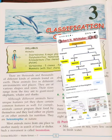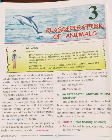Today we are going to learn about the classifications of animals. There are thousands and thousands of different kinds of animals found on Earth. These animals live in different environments and places, and come in various sizes and shapes — ranging from the tiny ant to giant-sized elephants, whales, and sharks. Although different animals have unique features, they show certain common features as well. For example, animals cannot prepare food by themselves and feed either on plants or on other animals for nutrition.